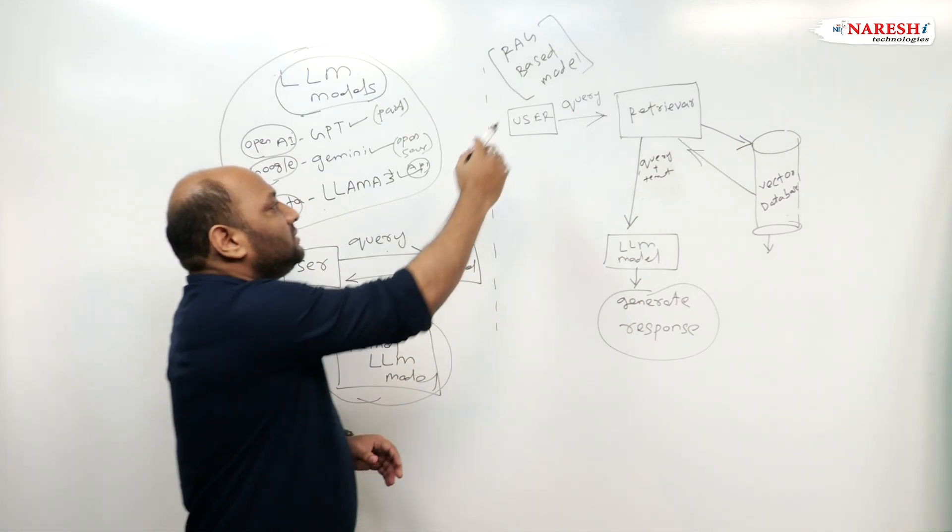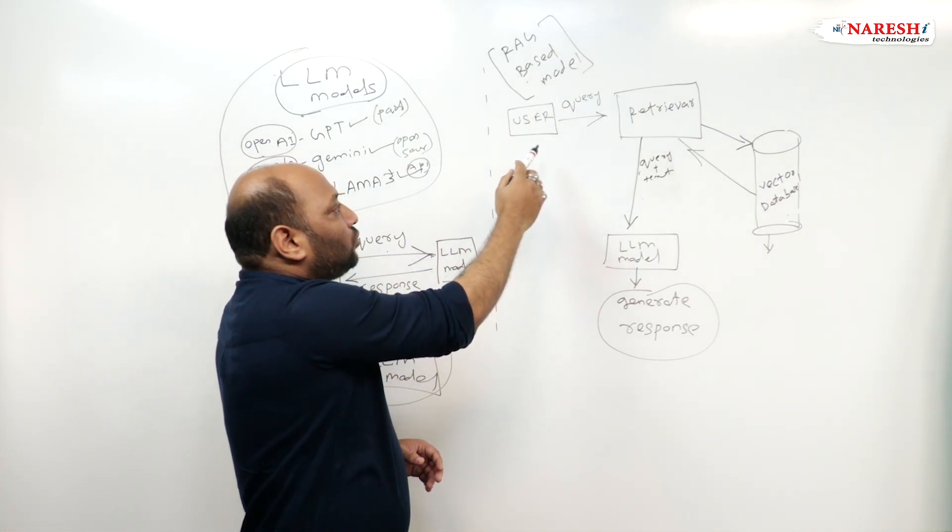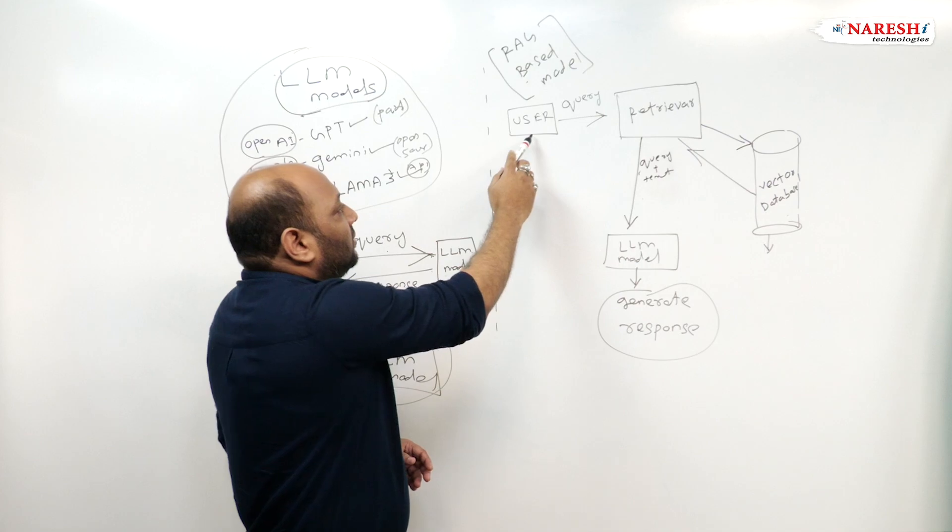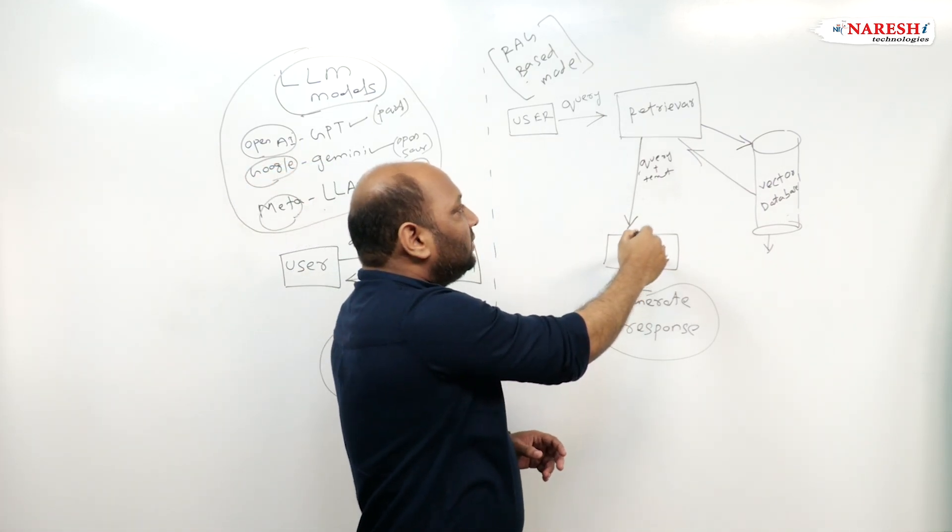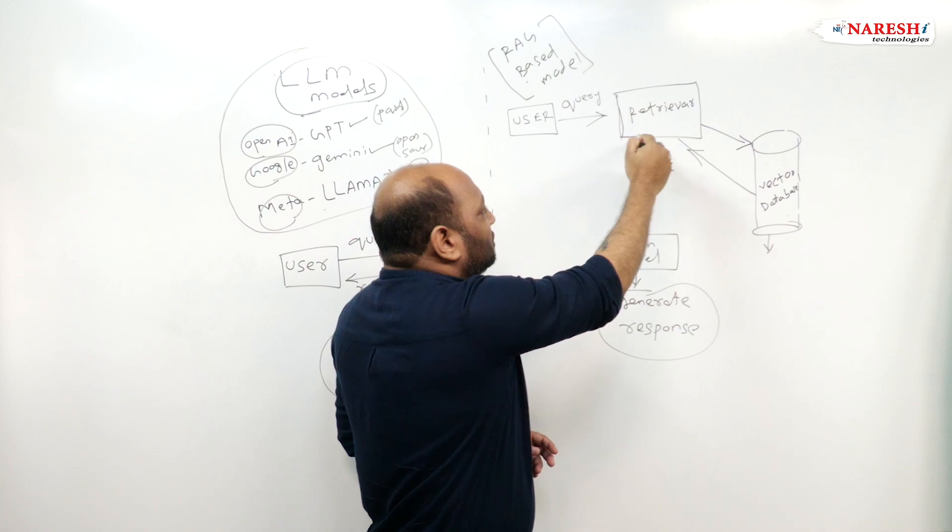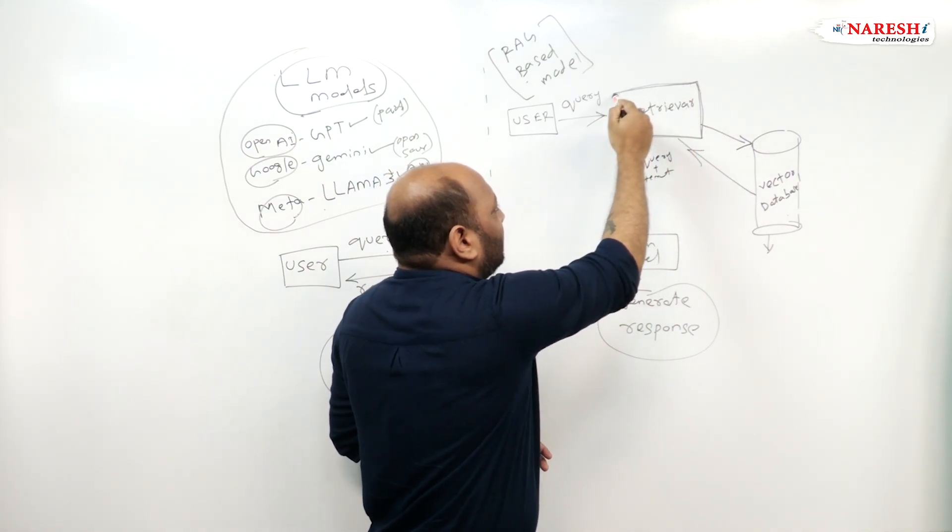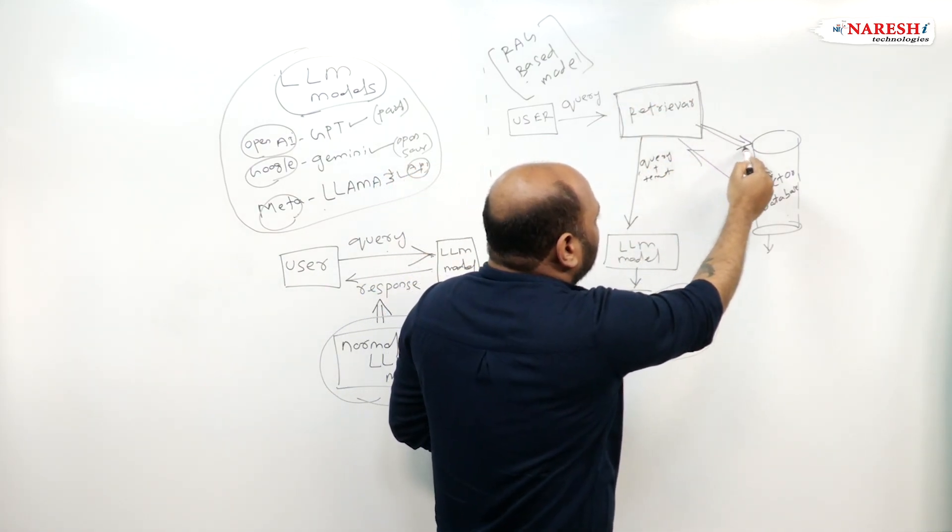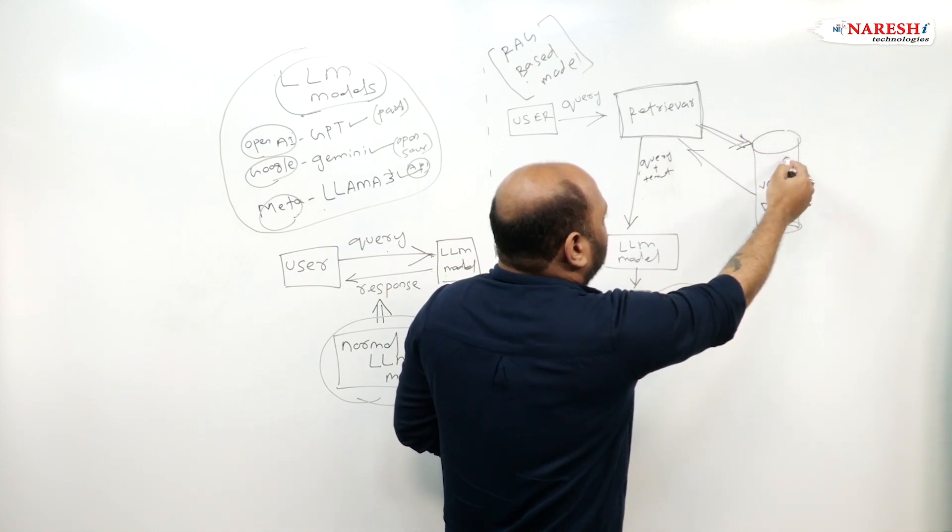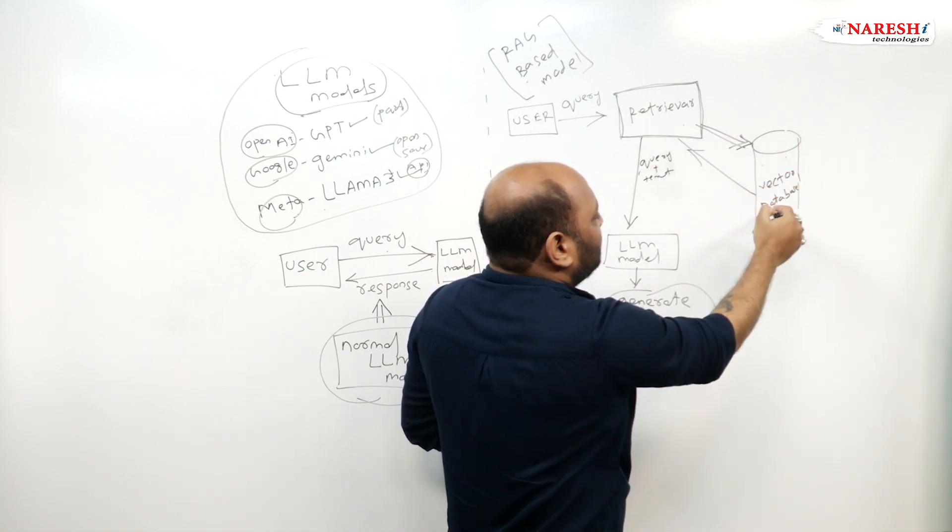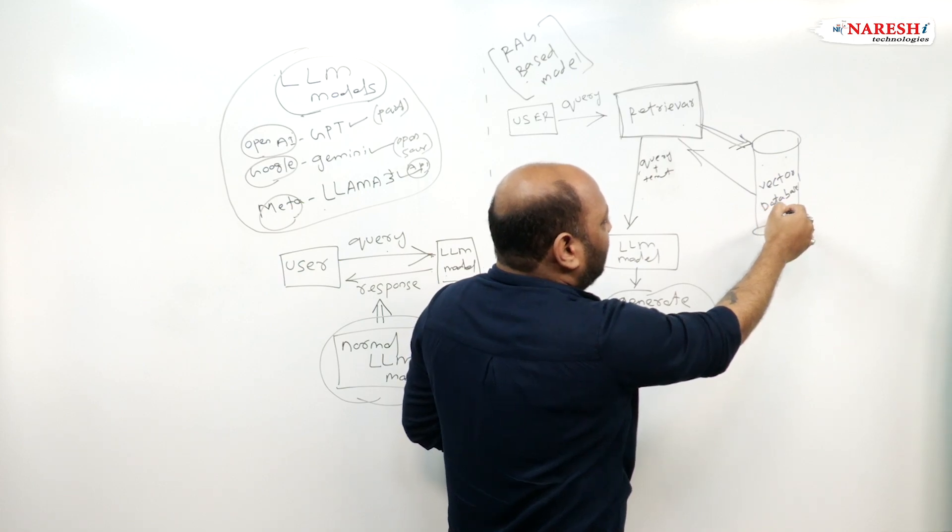But what is a RAG-based model? When a user writes a query, rather than reaching the LLM model directly, it retrieves the text and stores the text data in the form of embedding vectors using similarity vectors, which uses the concept of embeddings.